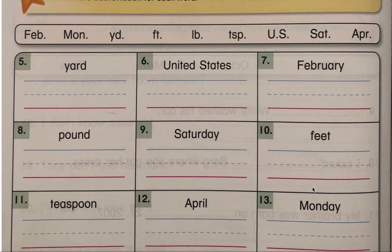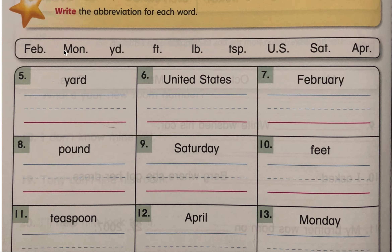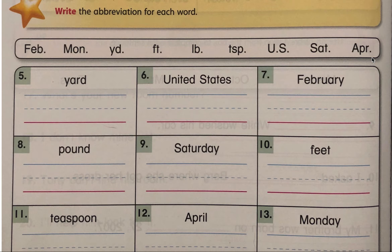Okay everyone, we're ready for numbers five to thirteen. At the top of the activity we have nine abbreviations: FEB., MON., YD., FT., LB., TSP., US, SAT., and APR. You need to put the correct abbreviation in the correct box — match the abbreviation to the word it means.